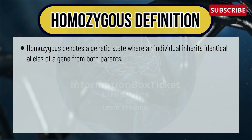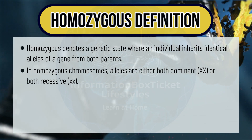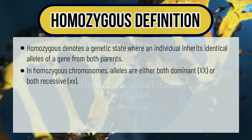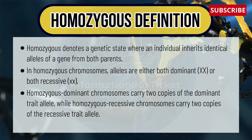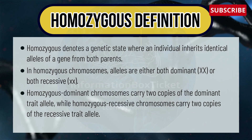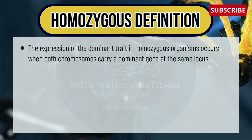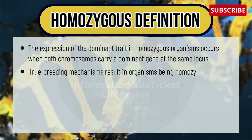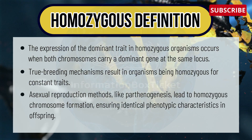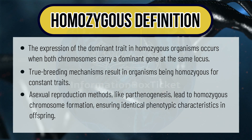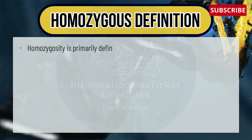Let's begin with the definition of homozygous. Homozygous denotes a genetic state where an individual inherits identical alleles of a gene from both parents. In homozygous chromosomes, alleles are either both dominant or both recessive. Homozygous dominant chromosomes carry two copies of the dominant trait alleles, while homozygous recessive chromosomes carry two copies of recessive trait alleles. True breeding mechanisms result in organisms being homozygous for constant traits.